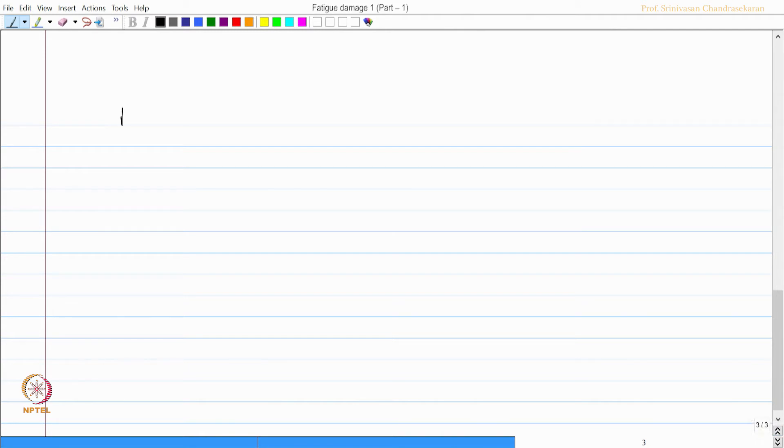In this case, N denotes the number of cycles to fracture the material. S denotes the stress range, that is very interesting. It is not a single value at which the material will fracture, but there is a range.